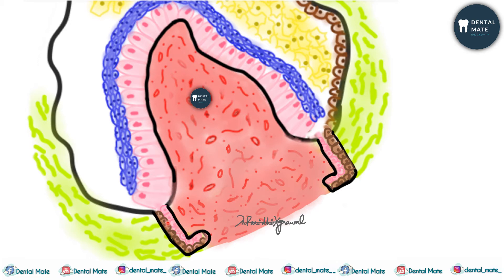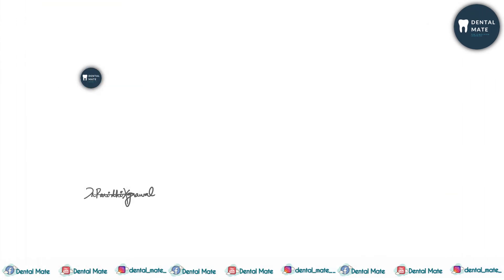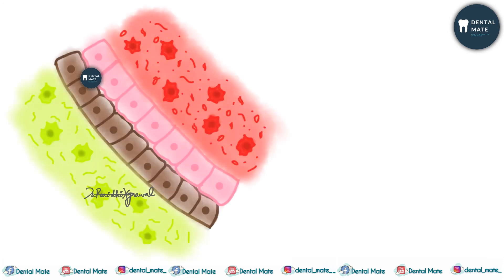Radicular dentine formation is slower than coronal dentine formation and is less mineralized. The collagen fibers here are laid parallel to the cemento-dentinal junction and are adjacent to the non-collagenous matrix of HERS.